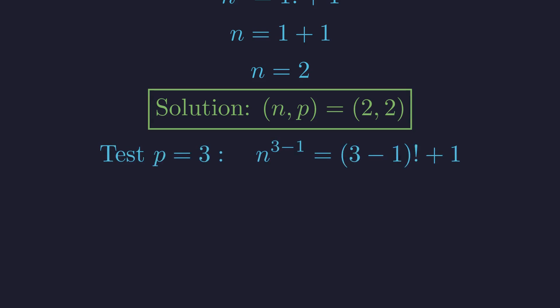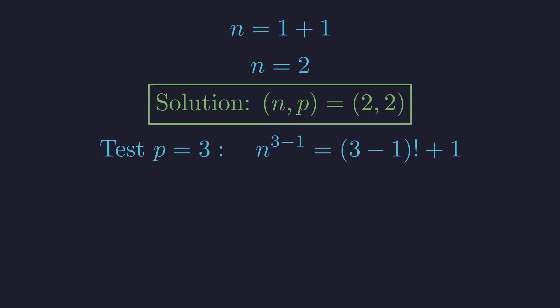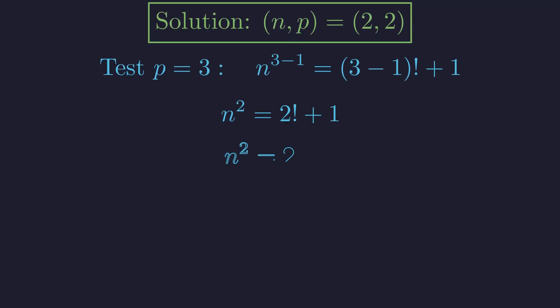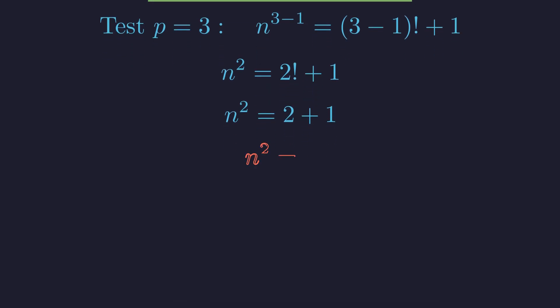Now let's try the next prime, p equals 3. The equation becomes n squared equals 2 factorial plus 1. Evaluating the factorial gives us n squared equals 2 plus 1. This simplifies to n squared equals 3, which has no integer solution for n.